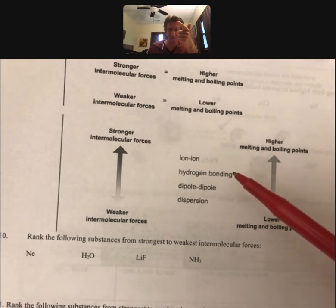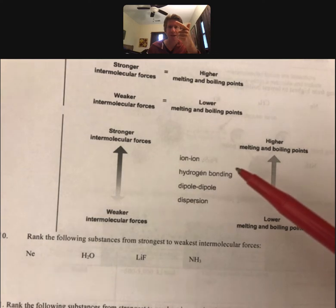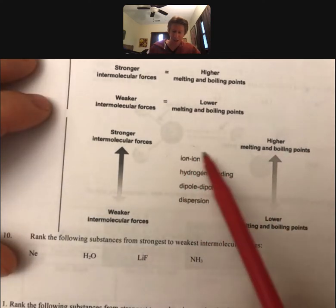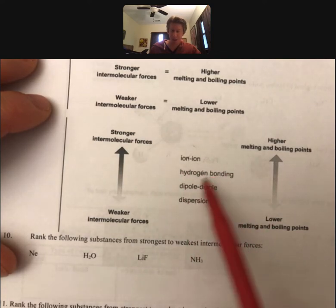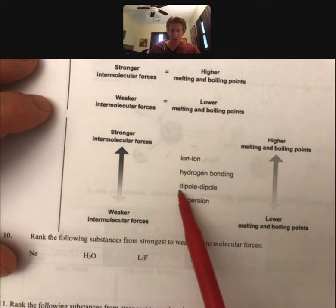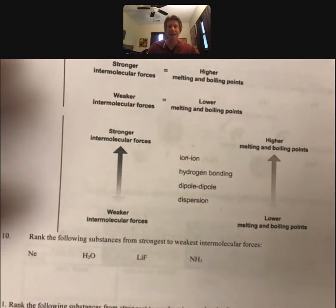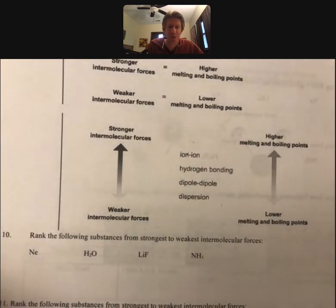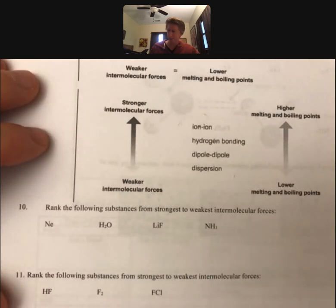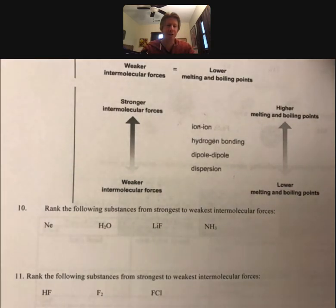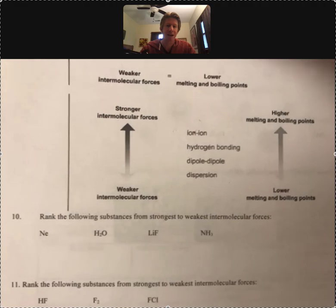But anything with Ion-Ion is always bigger than anything with hydrogen bonding, which is then bigger than anything with dipole-dipole, which is then bigger than anything that has only dispersion forces. And that's, you know, not 100% true, but it is for this course. I will allow you to work on the last ones here. Please let me know if you have any questions about these, and I will be happy to answer them.